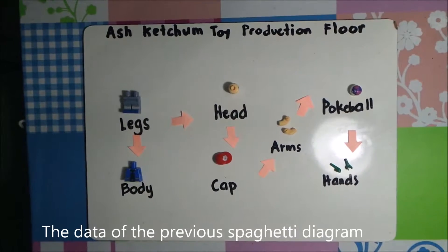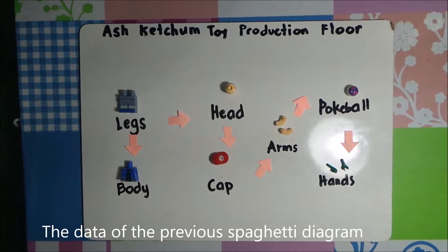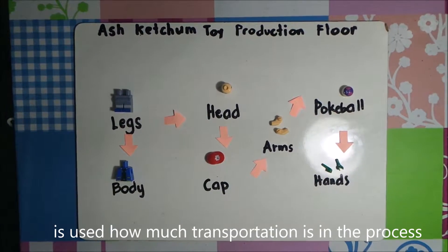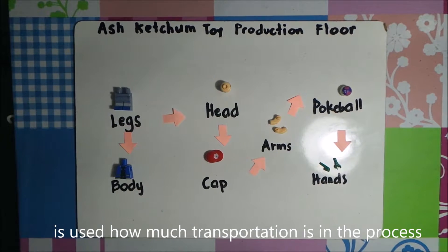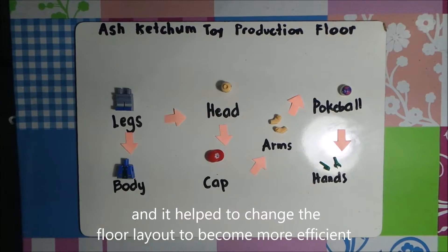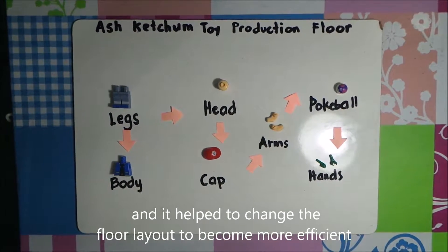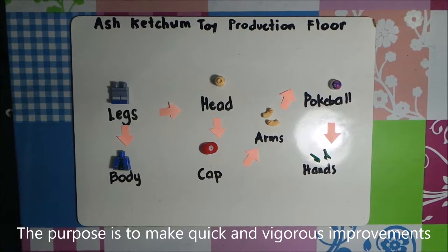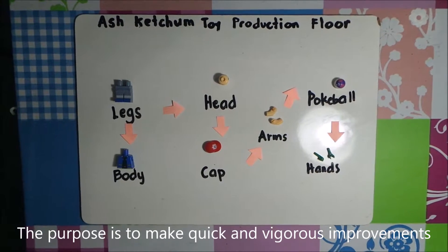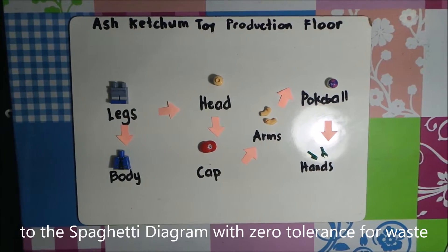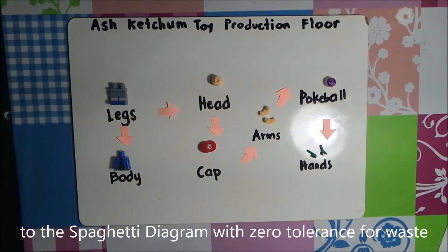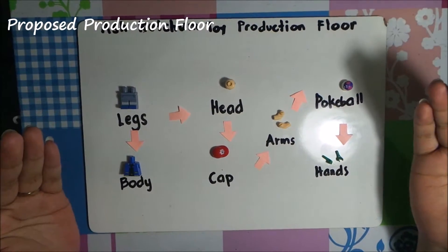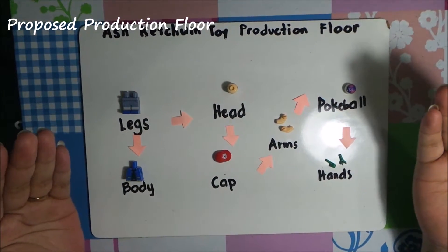The data of the previous spaghetti diagram is used to show how much transportation is in the process, and it helps to change the floor layout to become more efficient. The purpose is to make quick and vigorous improvements to the spaghetti diagram with zero tolerance for waste. So this is the proposed Ash Ketchum toy production floor.